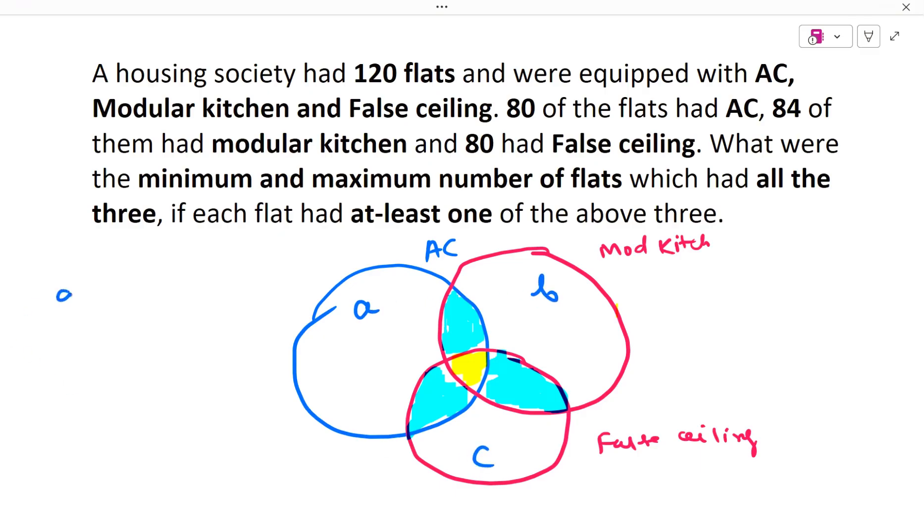I mean, A is only AC, B is only modular kitchen MK, and C is only false ceiling. So my A plus B plus C is exactly one, representing exactly one variable. So exactly one AC plus exactly one modular kitchen plus exactly one false ceiling. I am just denoting this by 1.